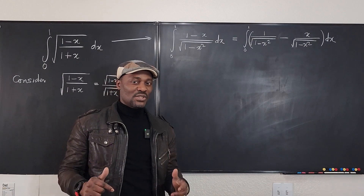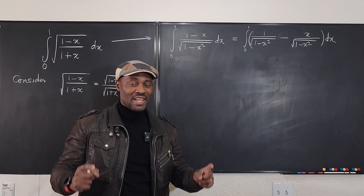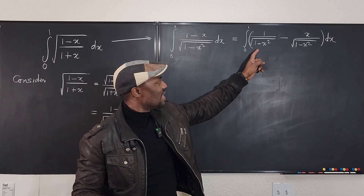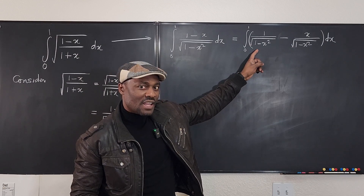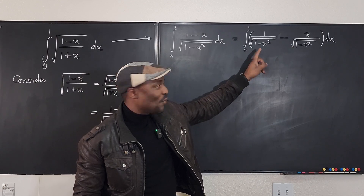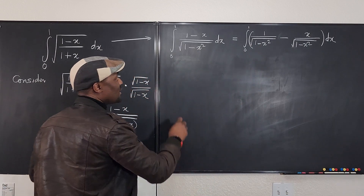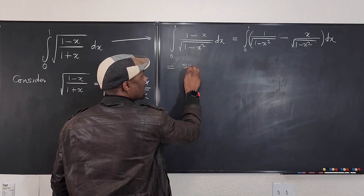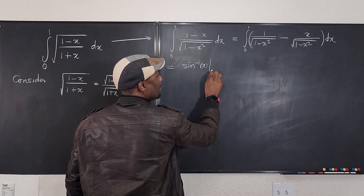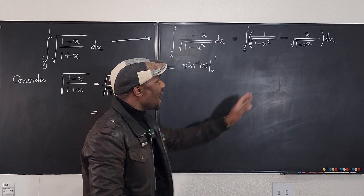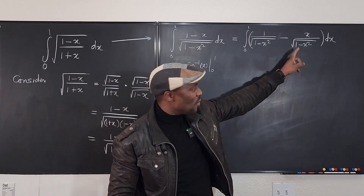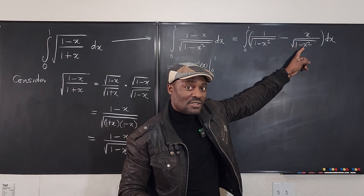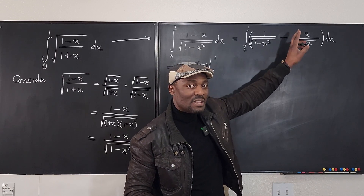Now that we have integrals that are familiar, you just need to think about how to integrate each part. This first part — 1 over the square root of 1 minus x squared — is what you integrate to get arcsin x. So we can say that this integral is arcsin x evaluated from 0 to 1. And for the second part, when you integrate x over the square root of 1 minus x squared, you can use u-substitution because the derivative of 1 minus x squared is negative 2x, which is a multiple of just x.